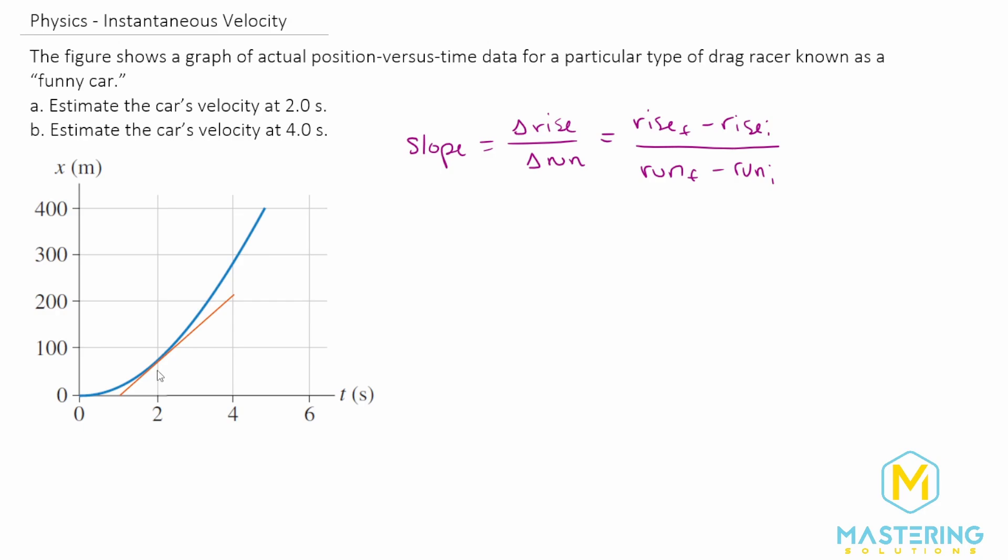So now when we look at this line that we just created, the rise is going from zero up to about 200. So let's put v at two seconds equals 200 meters minus zero meters—that's where we started out down there—and that's going to be over the run,